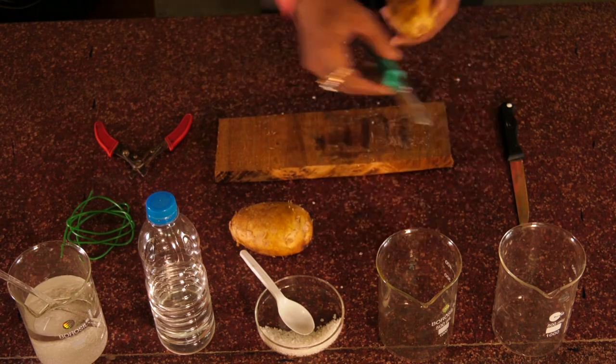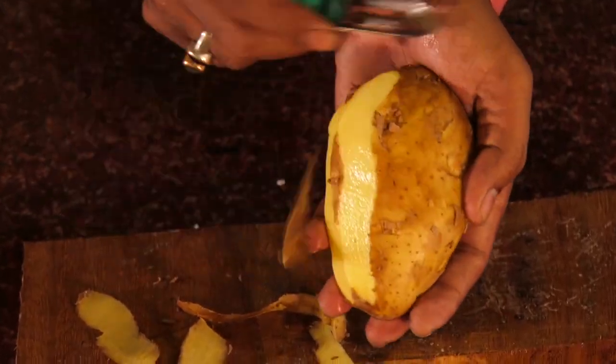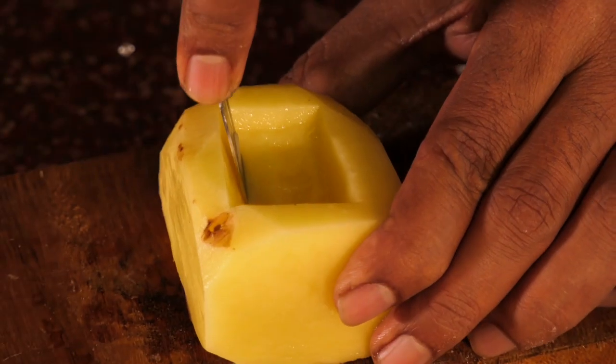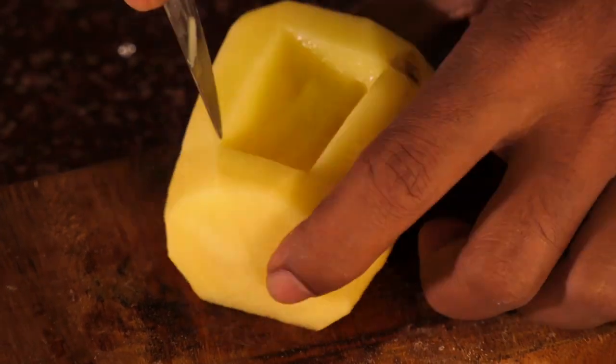While the sugar dissolves in the water, let us peel the potatoes. Make a few hollow cubes with these potatoes. The walls should be as thin as possible.